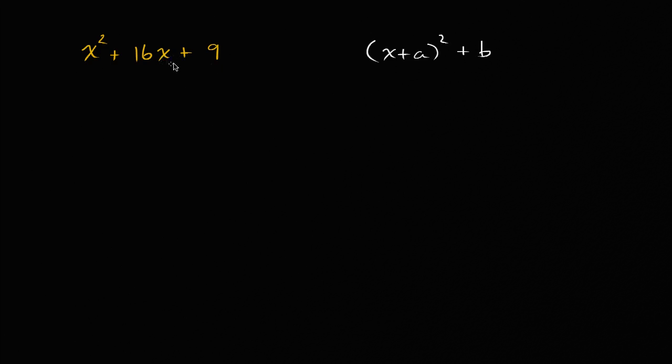So how do we write this in this form? Well, one way to think about it is if we expanded this x plus a squared, we know if we square x plus a, it would be x squared plus two ax plus a squared, and then you still have that plus b right over there.